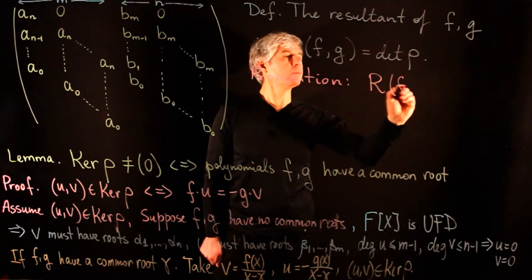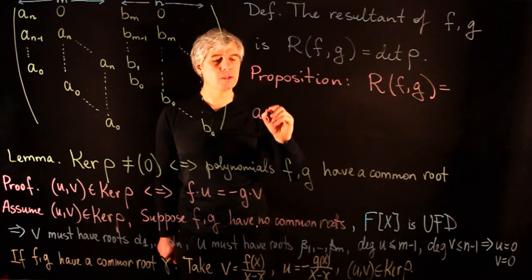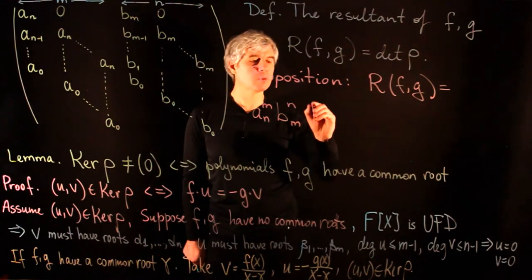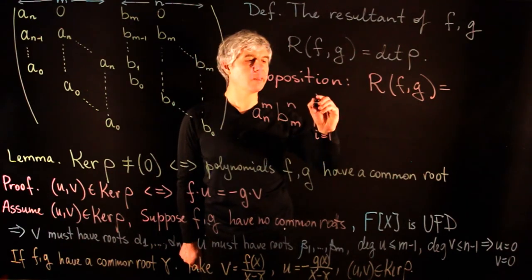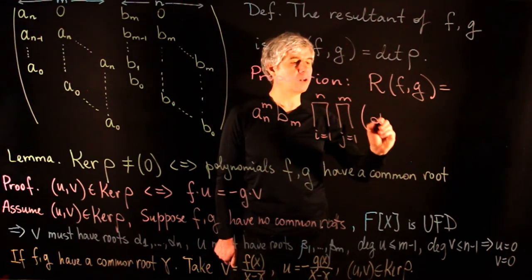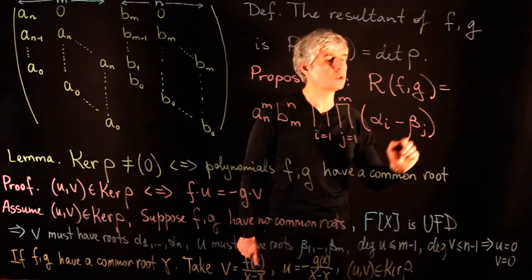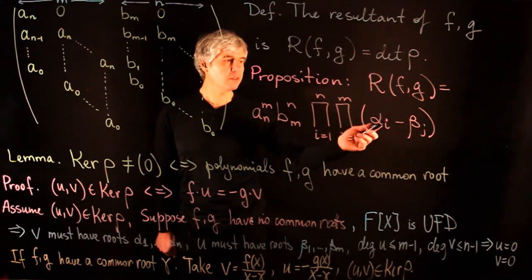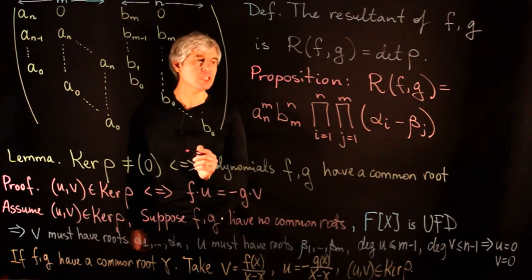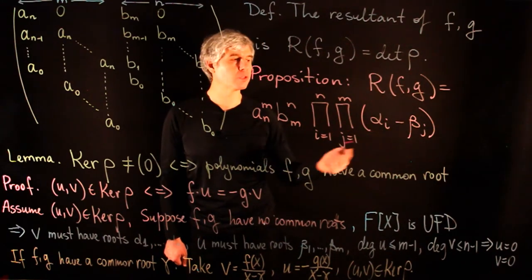We state the following proposition: R(f, g) is given by the formula a_n^m · b_m^n · ∏_{i=1}^{n} ∏_{j=1}^{m} (α_i − β_j), where α_i are roots of f and β_j are roots of g. This formula is consistent with the lemma: the determinant is zero if and only if some root of f coincides with some root of g.